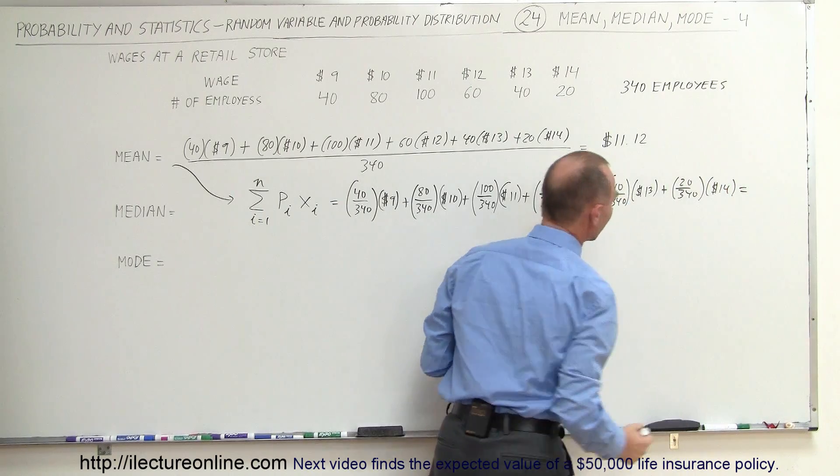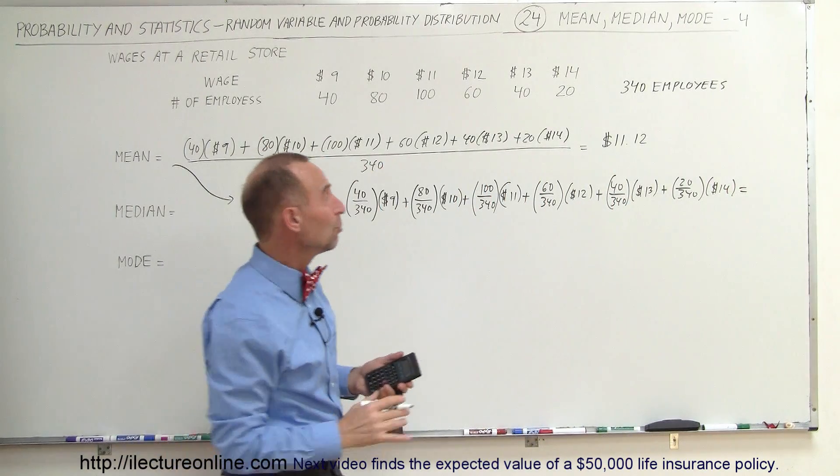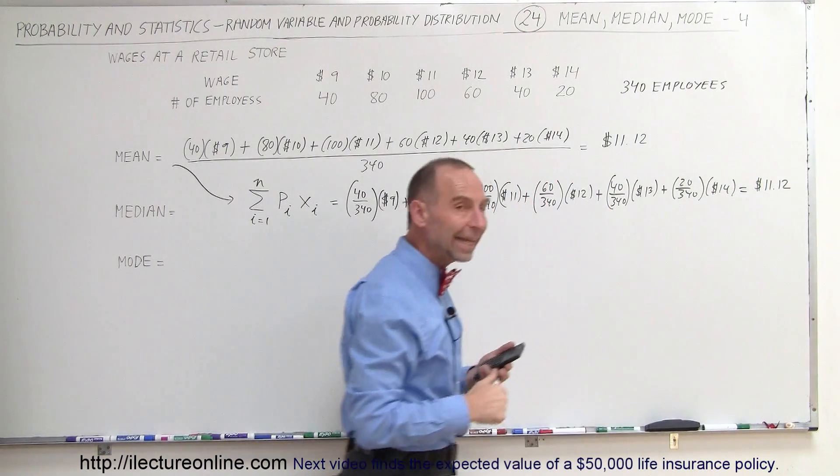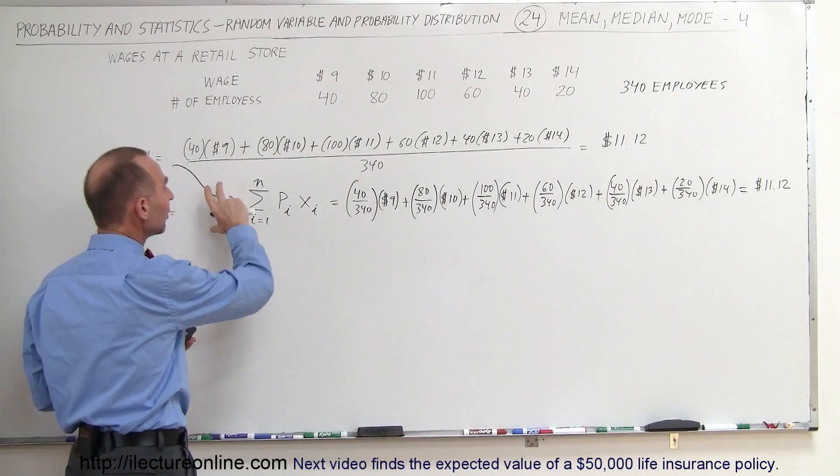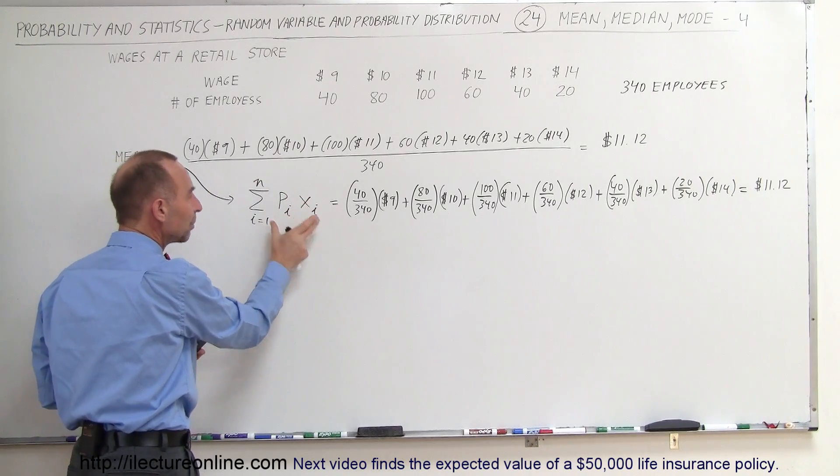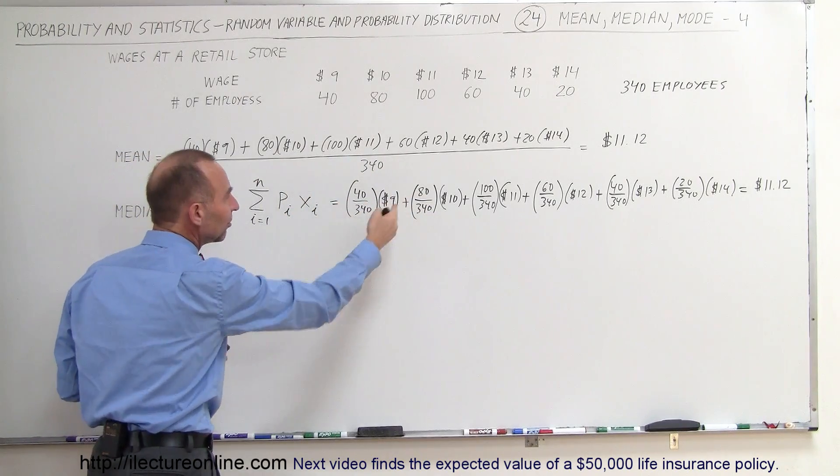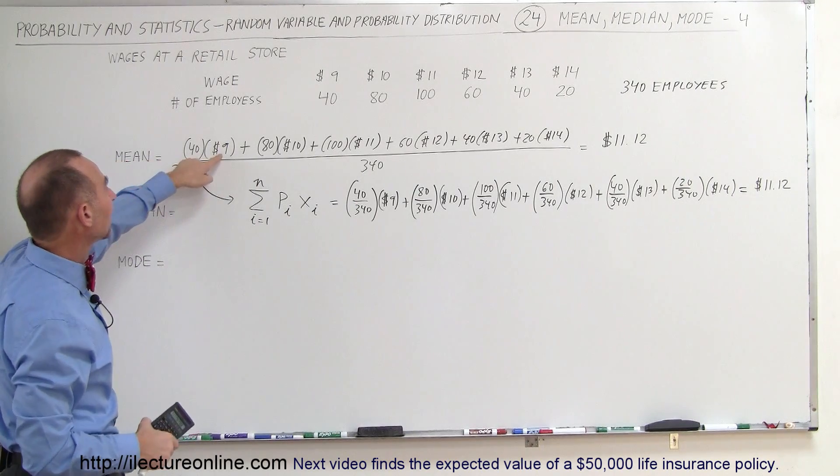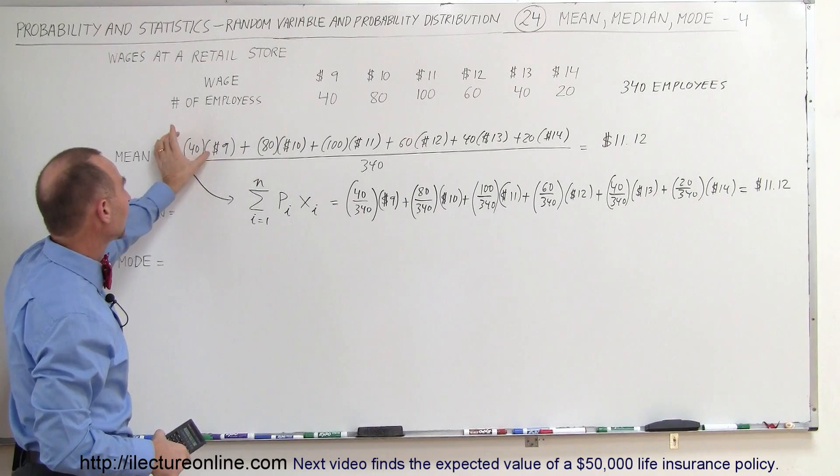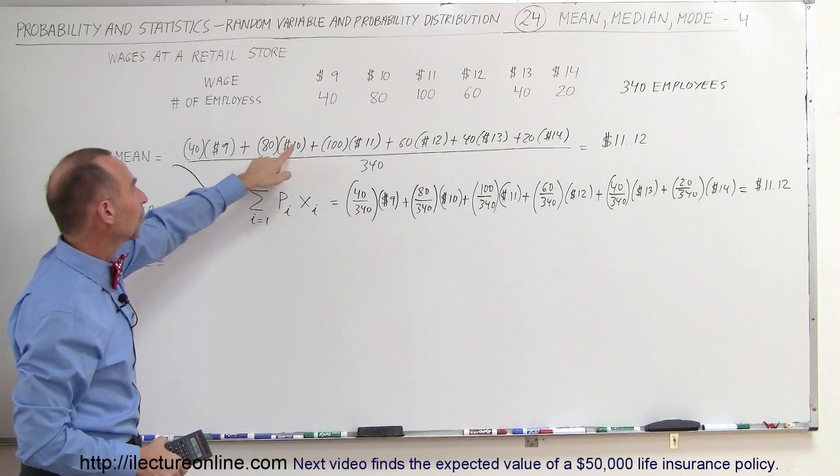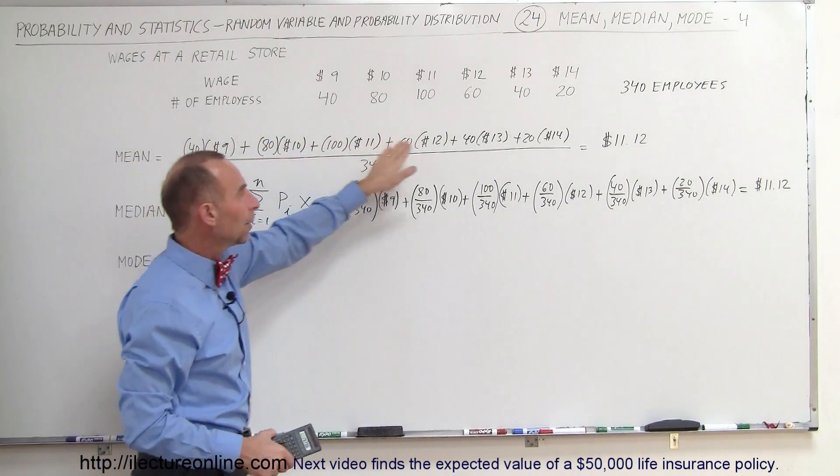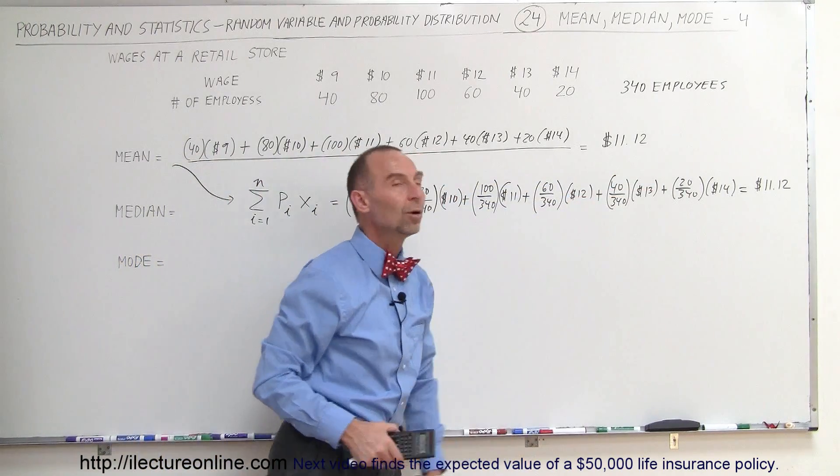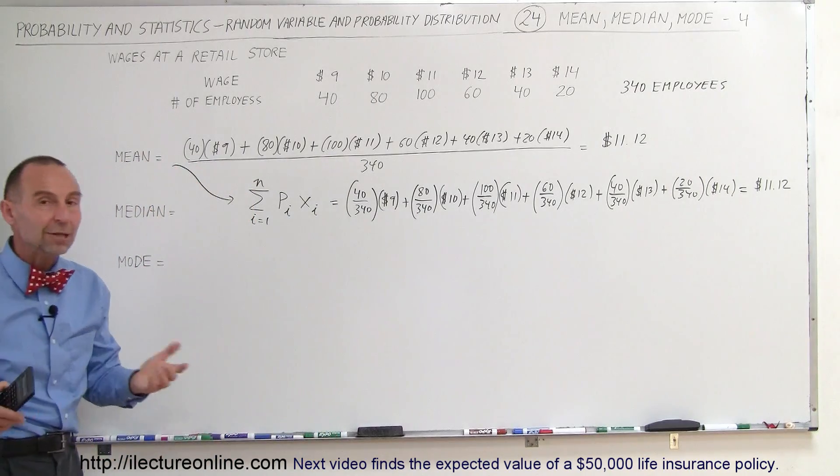And then if you work that out, you'll find out you get the exact same result. So notice that is then calculating the expected value. This here is the equation of calculating the expected value. And so, the expected value doing like this is exactly the same as getting the average value by simply multiplying the amount of money 40 of these people earn times 40, the amount of money 80 of these people earn times 80 and so forth. Add up all the wages earned by all the employees divided by 340 and you get the same result. So that's how we find the mean or the average.